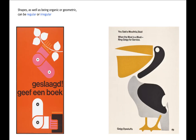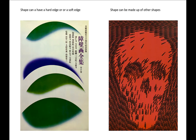Shapes, as well as being organic or geometric, can be regular or irregular. Shape can have a hard edge or a soft edge. Shape can be made up of other shapes.